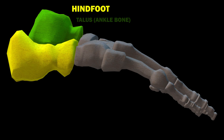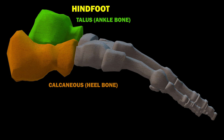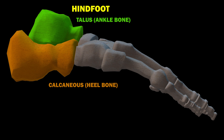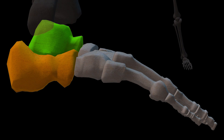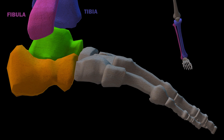The hindfoot includes the talus, or ankle, and the calcaneus. The calcaneus is the heel bone, the largest bone in your foot. The calcaneus has a cushy layer of fat underneath it to soften the impact of your footsteps. The calcaneus bone connects to the talus at the subtalar joint, also called the talocalcaneal joint. The top of the talus connects to the tibia and to the fibula, the two long bones of the lower leg.